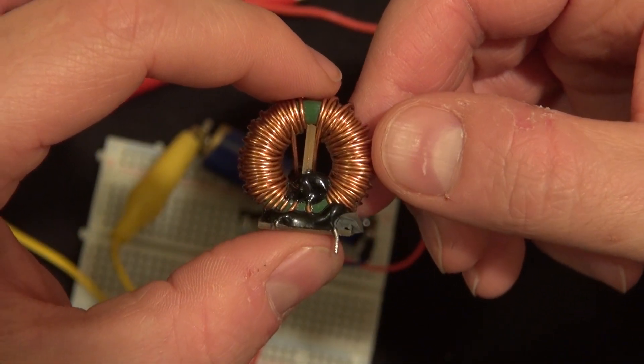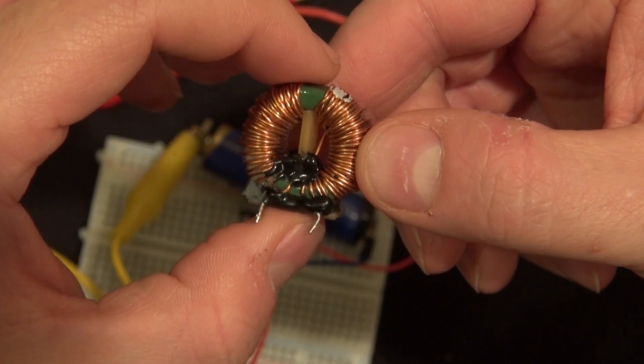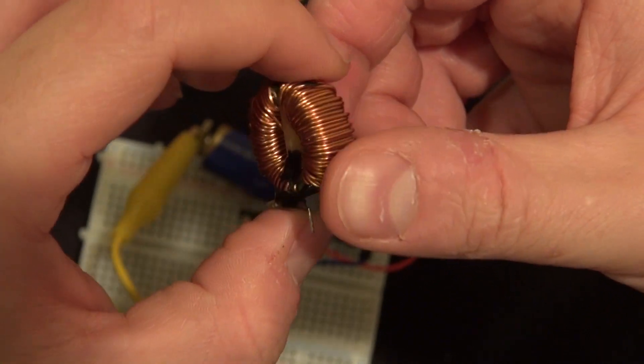So by just following that, that allows me to create the joule thief circuit using that toroid core inductor.